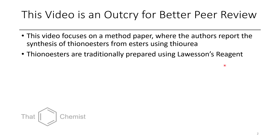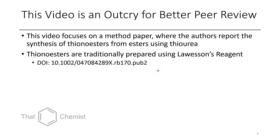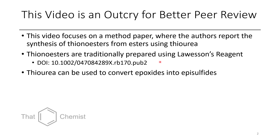If you normally want to make a thionoester, the most common method is to use Lawson's reagent, which is kind of like a Wittig, but it converts carbonyls into thiocarbonyls. Here's a reference to a paper that discusses all of the uses of Lawson's reagent.